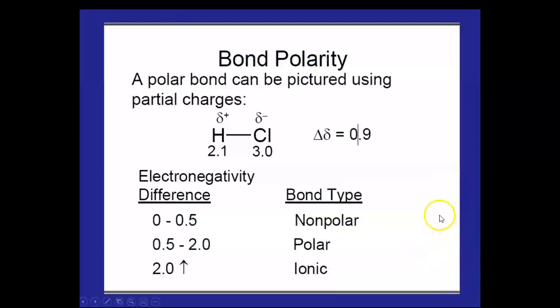Now, bond polarity. You can picture a polar bond using what we call partial charges, and your textbook does that. So, for instance, HCl, we've got 3.0 minus 2.1, or 0.9. That is a polar covalent bond between a hydrogen and a chlorine atom.